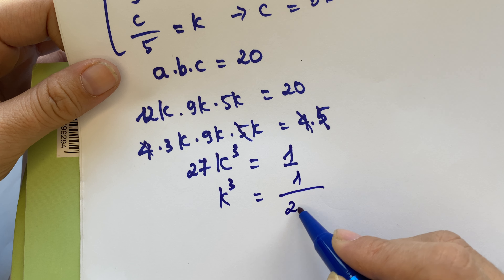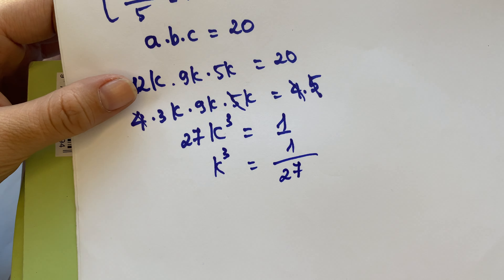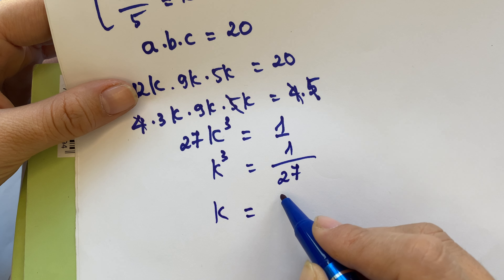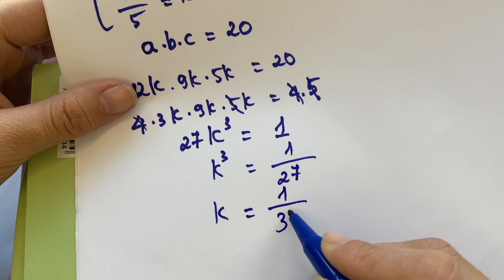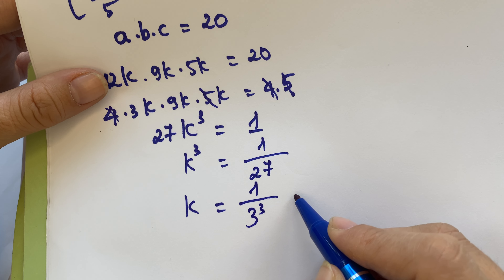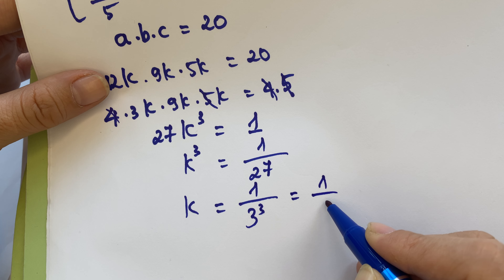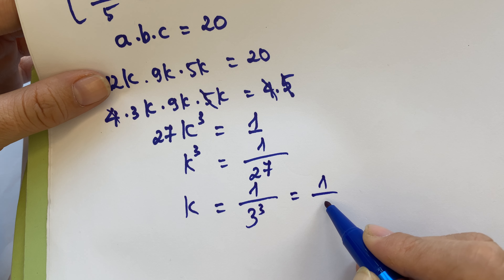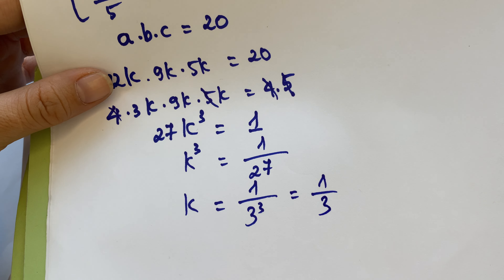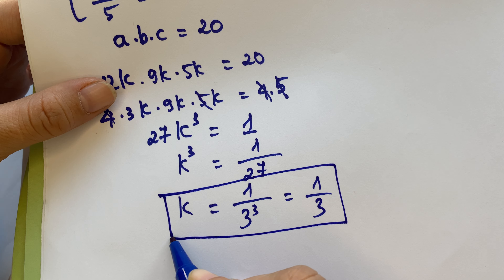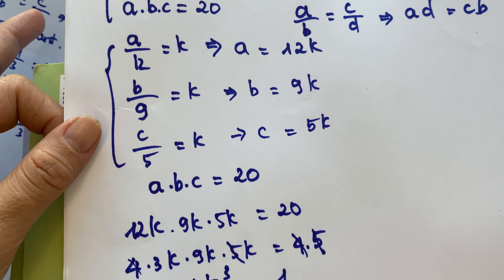So k cubed equals 1/27, which means k equals the cube root of 1/27, so k equals 1/3.